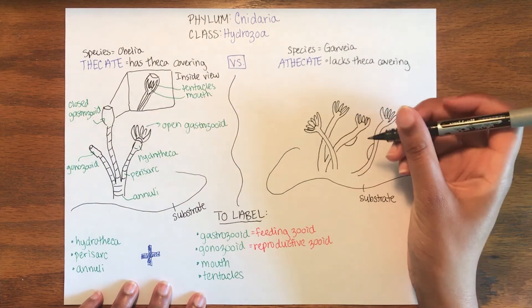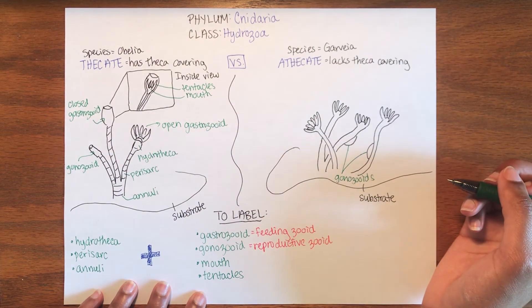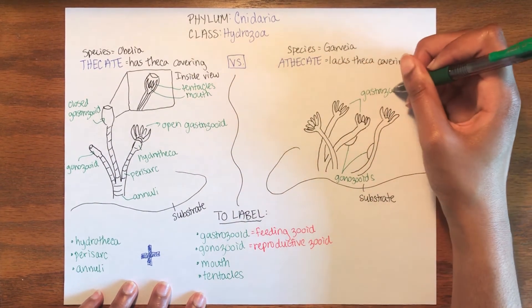In this case, the gonozoids are bulb-like extrusions on the stalk and the gastrozoids have their tentacles open to the environment.